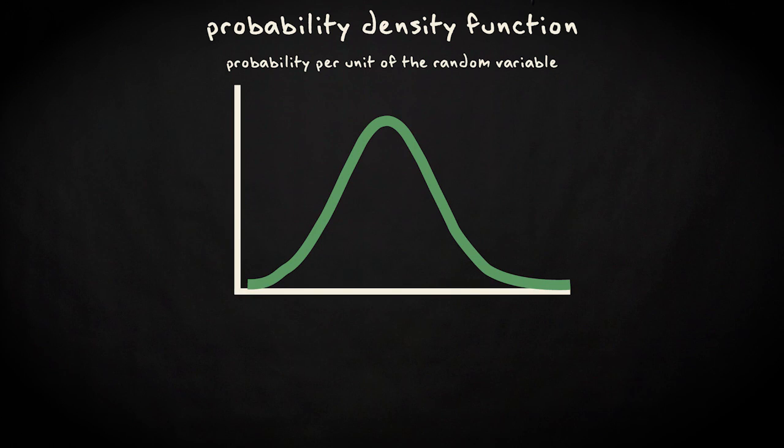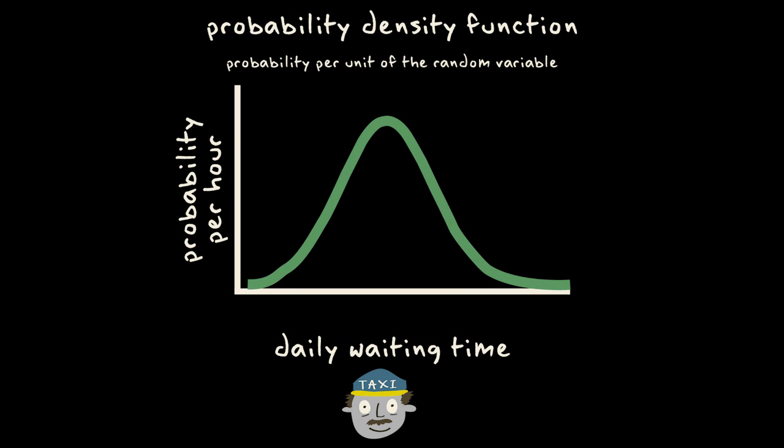Here is an example of a PDF of the daily waiting time by taxi drivers of the MoCum taxi company. At the y-axis you see the probability per hour and at the x-axis is the waiting time in hours.